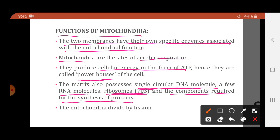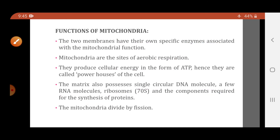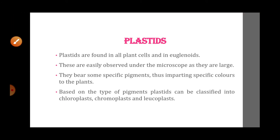Because mitochondria possess their own DNA, they can undergo self-multiplication — one mitochondrion can give rise to another. This makes mitochondria a semi-autonomous organelle. The mitochondria divide by fission.